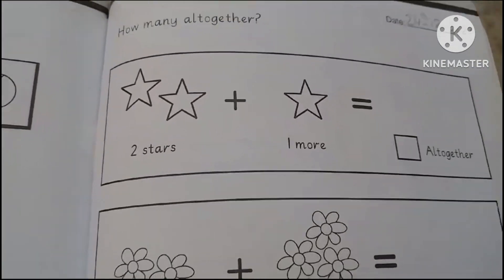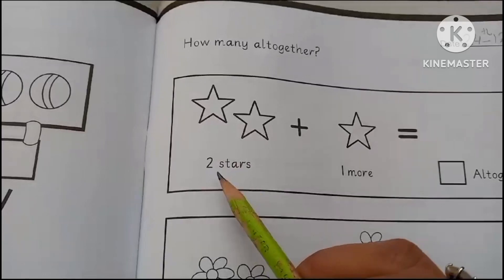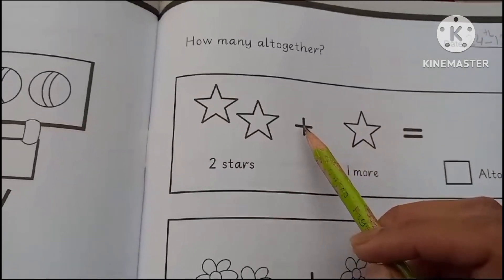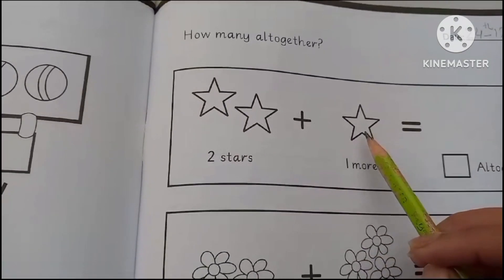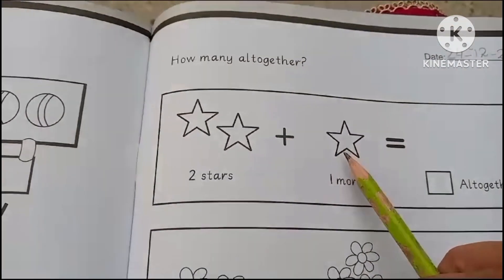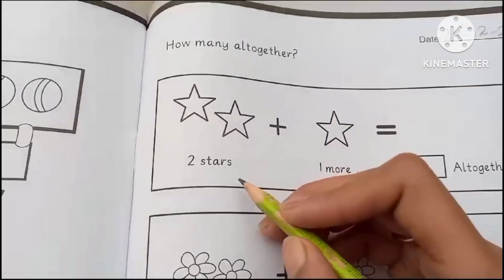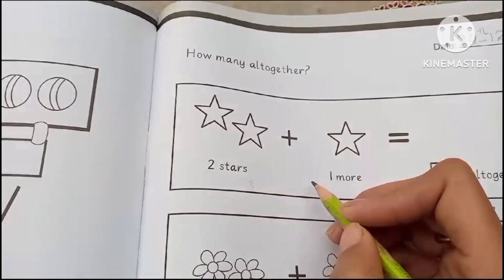So there are 2 stars. 1, 2. 2 stars plus 1 star. So how many all together? 2 stars plus 1 star is equal to 1, 2 and 1.